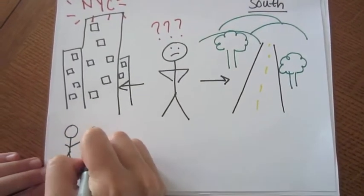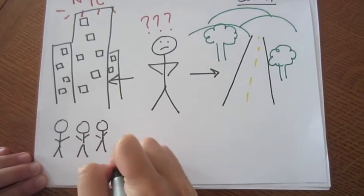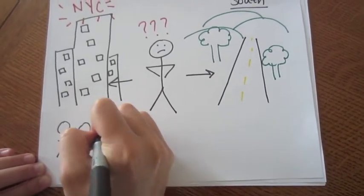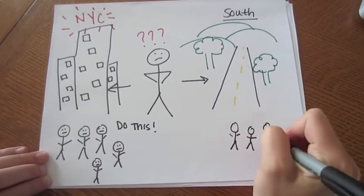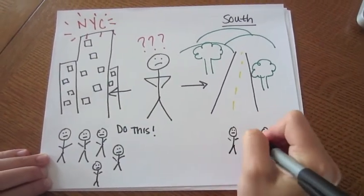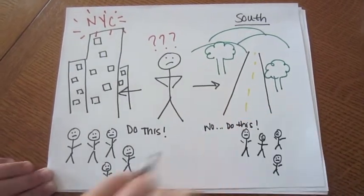Another prominent theme is the destructiveness of fighting stereotypes with stereotypes. Each black community the narrator encounters expresses a different idea of how blacks should behave. The narrator finds that by limiting themselves strictly to their race, they only bring about increased oppression and counterproductivity.